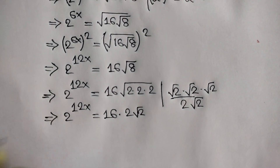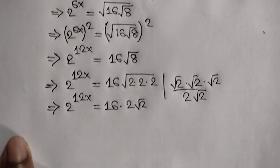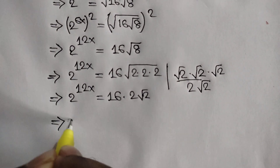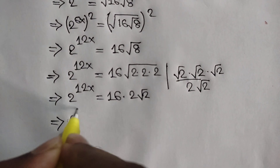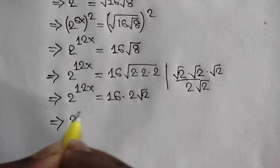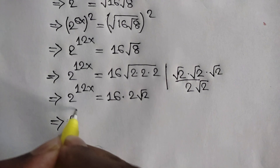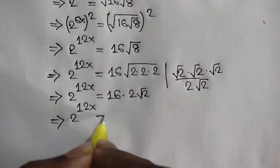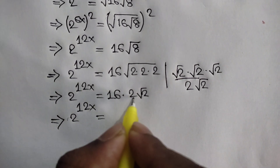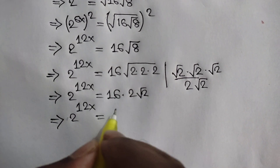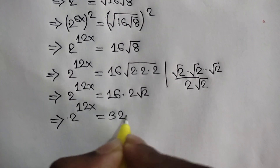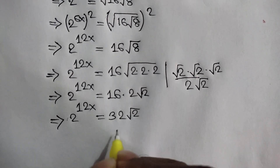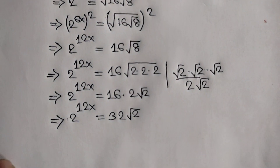So we can write 2 to the power 12x is equal to 16 times 2, which means 32, times the square root of 2.